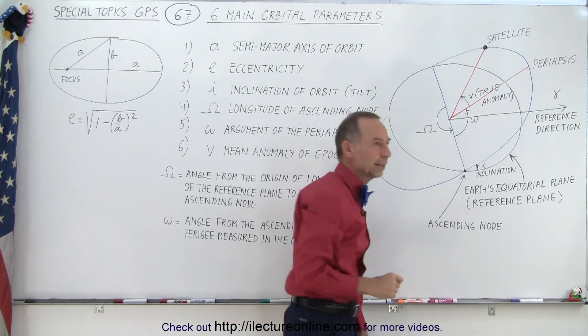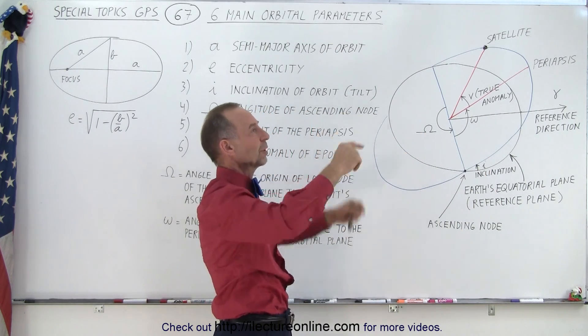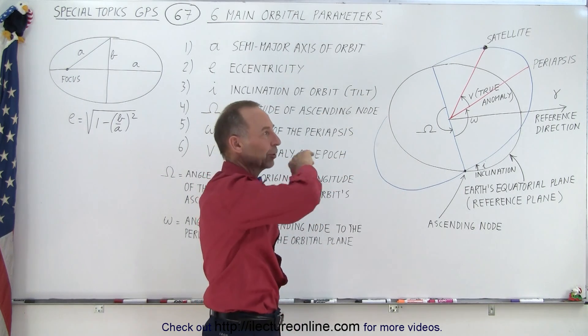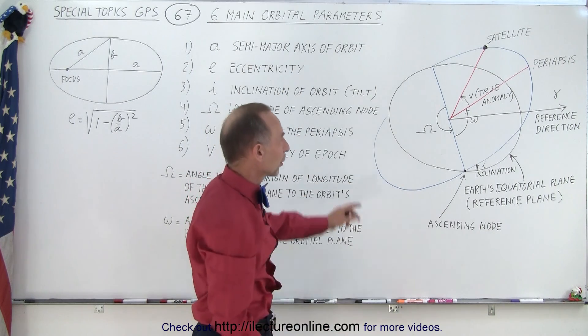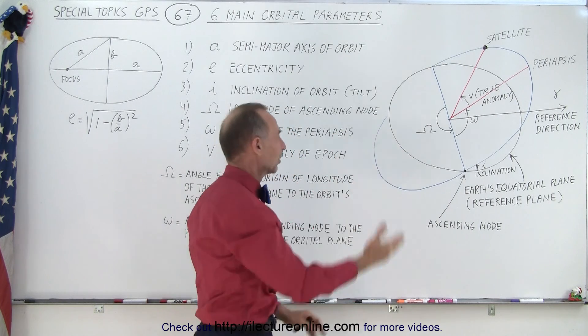So that's why sometimes when you see a map on television where they show the satellites, the satellites tend to do this as they go around the Earth up and down above and below the equator. That's because the orbit is directed that way or tilted that way.